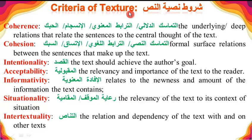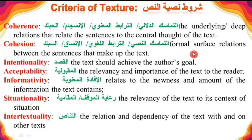A text should abide by the following criteria of texture. It should be coherent, which means that the reader should understand the deep relationship between the sentences in terms of meaning and thought — this is called Tamasuk Dalali. Other terms include Al-Hibq, mentioned by Al-Jurjani, Al-Jahid and others, similar to Al-Sibq. The text should also be cohesive, so that the relationship between sentences is stated in terms of formal surface structure. It should express the author's goal and be accepted by the reader.